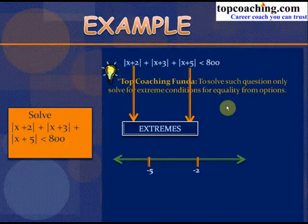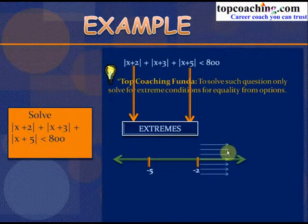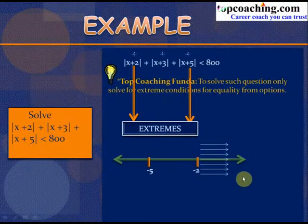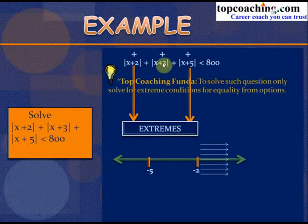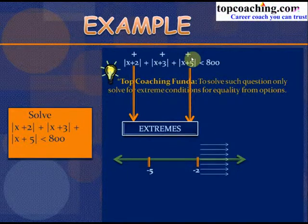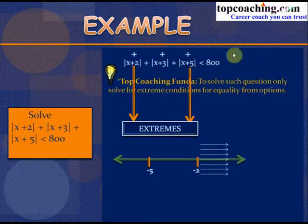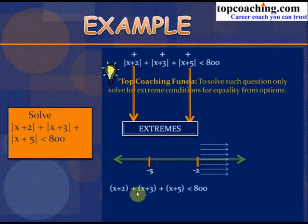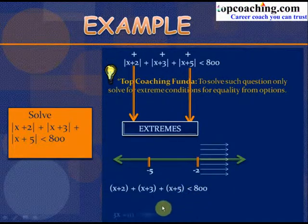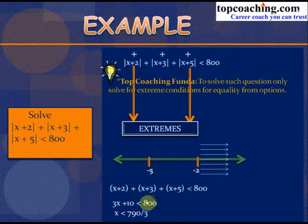The second extreme is x = −2. When x > −2, all three quantities become positive. The inequality becomes (x + 2) + (x + 3) + (x + 5) < 800, giving 3x + 10 < 800, so x < 790/3.